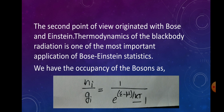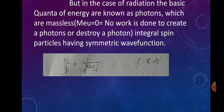The occupancy of the bosons is given by 1 / (e^((ε − μ)/kT) − 1). Since the chemical potential μ is zero for photons, this reduces to n_i / g_i = 1 / (e^(ε/kT) − 1). Photons are massless, so μ = 0, meaning the chemical potential is zero.